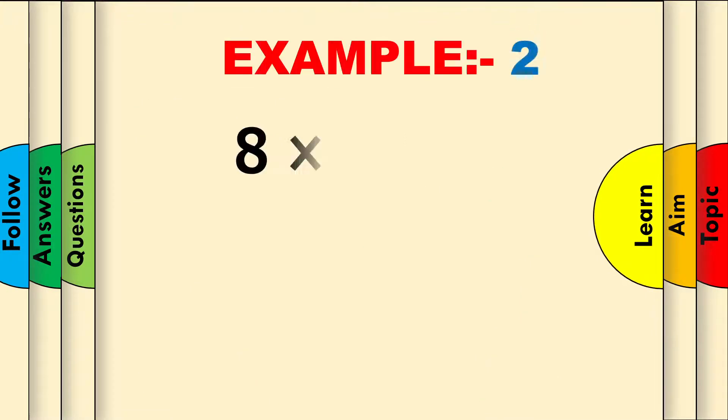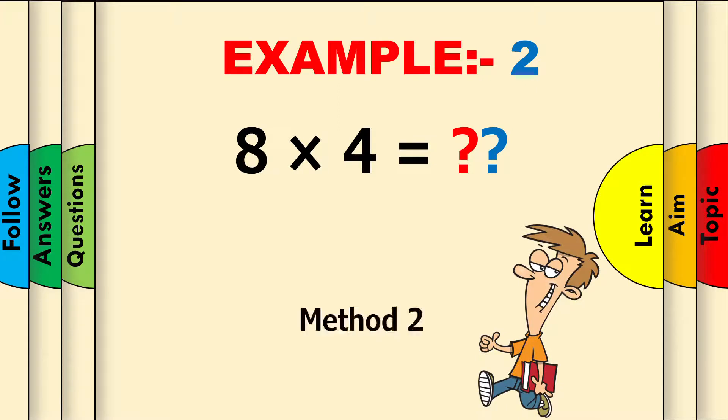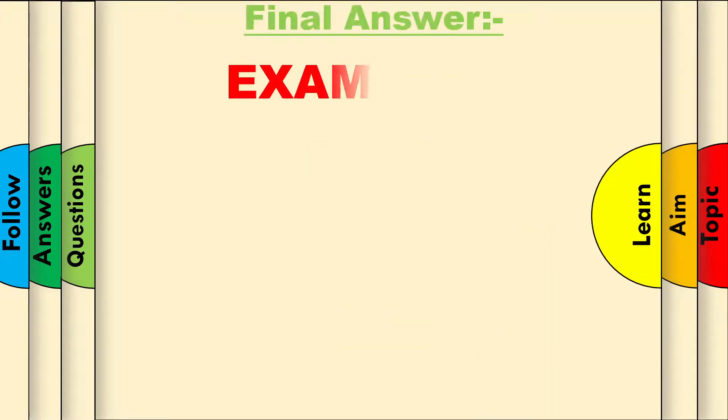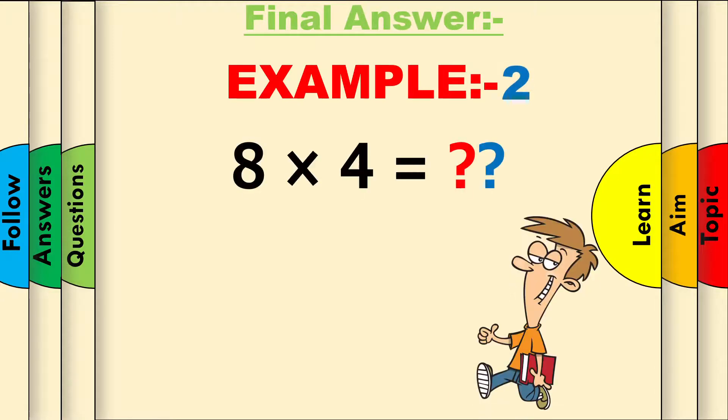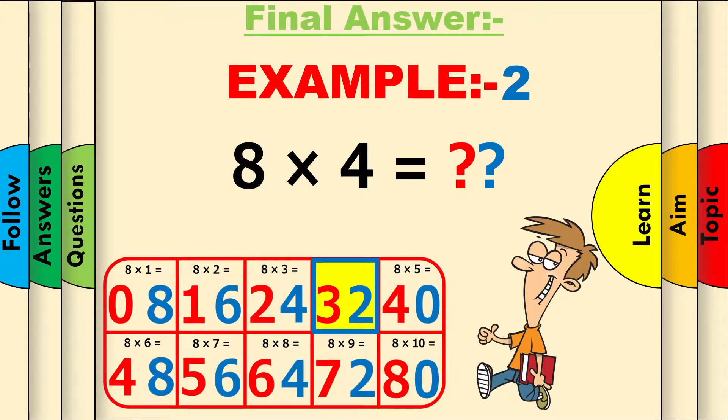Example 2. 8 times 4 equals what? Let's use method 2, the grid technique. Draw out the grid and find 8 times 4. Good job! Now just place this 32 in the final answer.